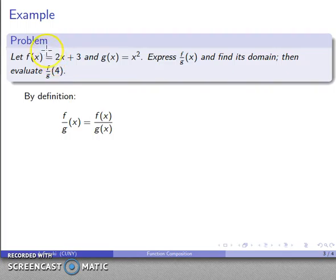Equals says whenever I see the one, I can replace it with the other. So f of x, I can replace it with 2x plus 3. g of x is the same thing as x squared, so wherever I see g of x, I can replace it with x squared. And so my quotient function, f of x over g of x, is going to be 2x plus 3 over x squared.